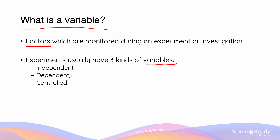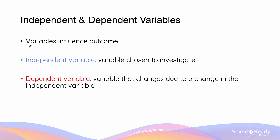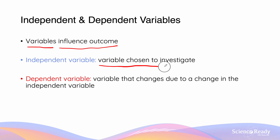The three types are the independent, the dependent, and the controlled variables. An independent variable is the variable which we choose to investigate, whereas the dependent variable is the variable that is going to change due to a change in our independent variable.